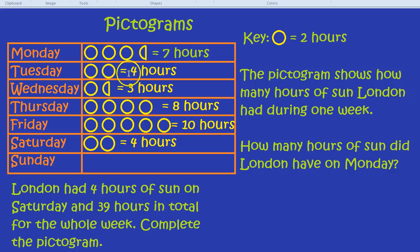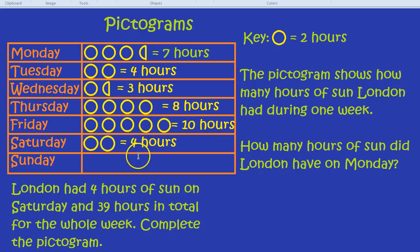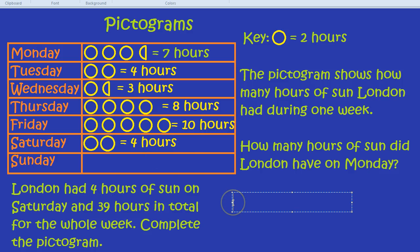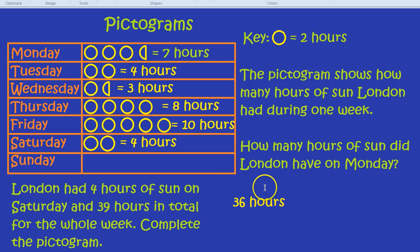Seven plus four is eleven. Eleven plus three is fourteen. Fourteen plus eight is twenty-two. Twenty-two plus ten is thirty-two. And thirty-two plus four is thirty-six. And it said we have thirty-nine hours in total. Thirty-six hours so far — that leaves three hours left.